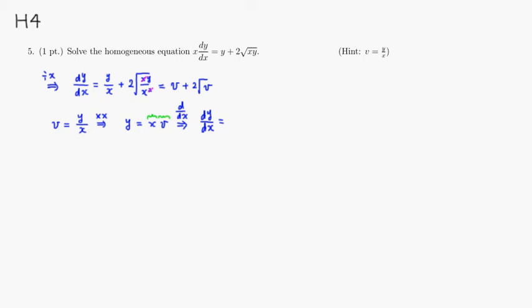So we're going to use product rule to take the derivative. Derivative of x is 1 times v, so you're going to get v, and the first guy, and the derivative of the second guy is dv over dx.